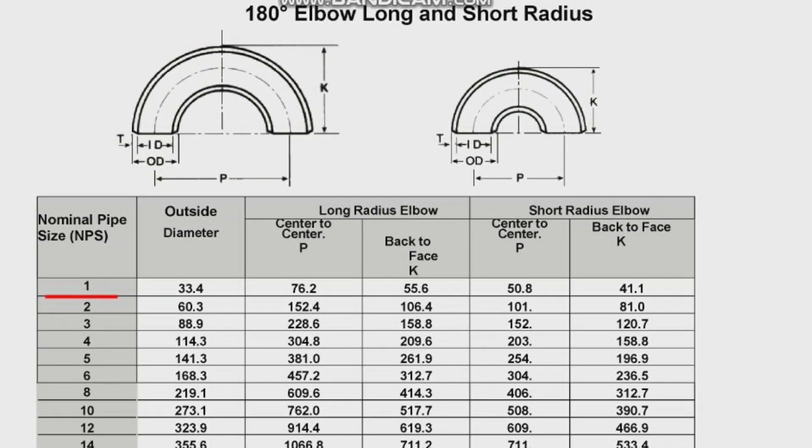Nominal pipe size 1 inch, outside diameter is 33.4 mm. For long radius elbows, P, center to center, is 76.2 mm. Back to face, K, is 55.6 mm.